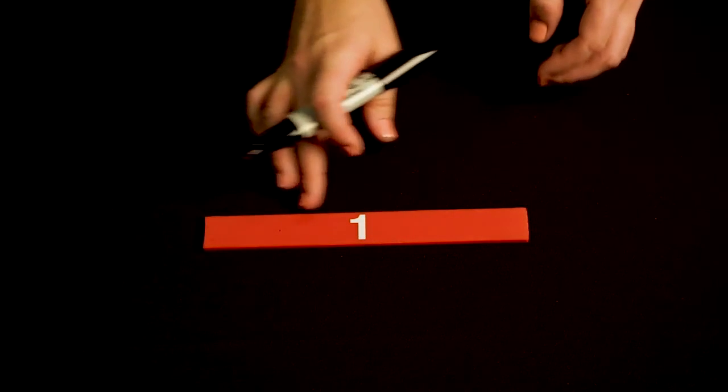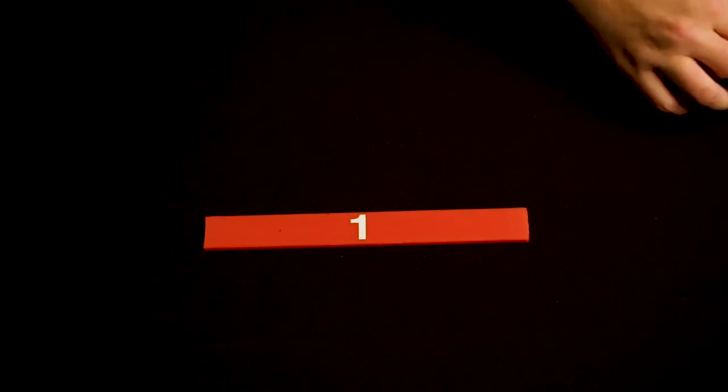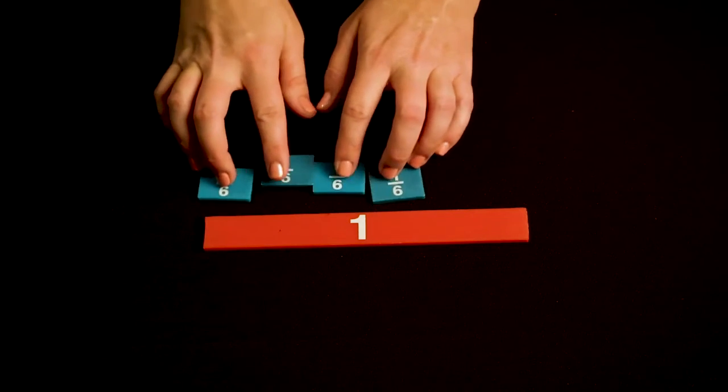Now I can also check that problem using my fraction tiles. So I'll get out my whole, and this also represents my number line with 0 on this side and 1 over here. Now remember I was comparing 4/6 to 5/12.